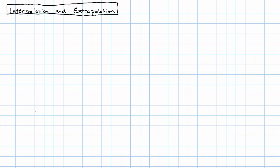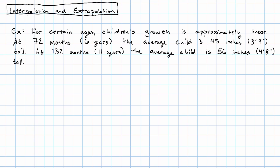Let me explain what I mean. For certain ages, children's growth is approximately linear. So, the average six-year-old is three-foot-nine, the average eleven-year-old is four-foot-eight.